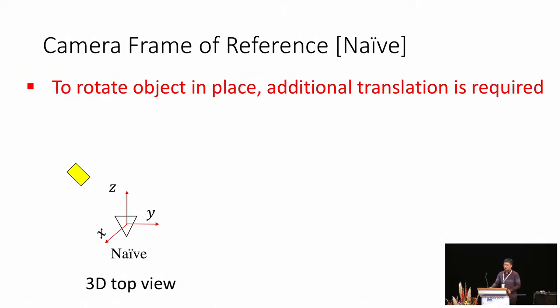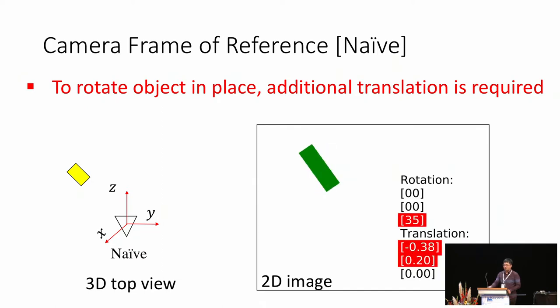If the network only wants to rotate the object in place, it needs to predict an additional translation to compensate for the induced motion. For example, in this animation, you can see that the network needs to predict a complex vector using the rotation coordinate, if we just want to rotate the object in place.